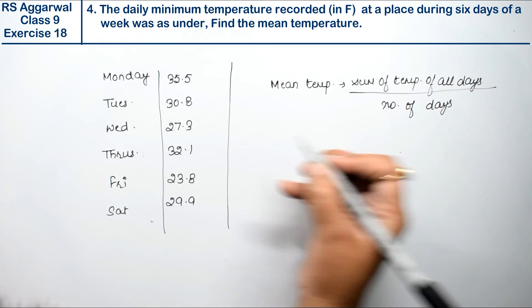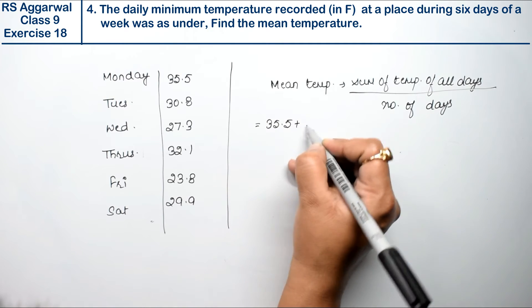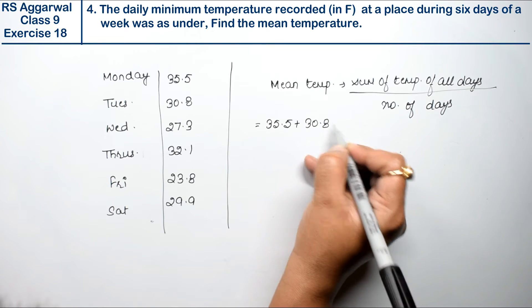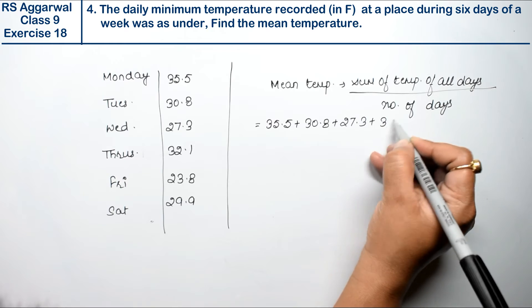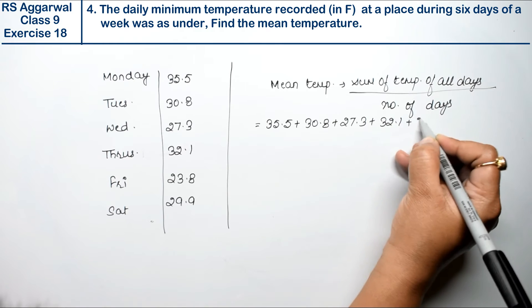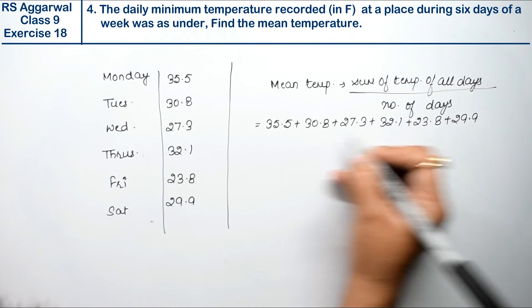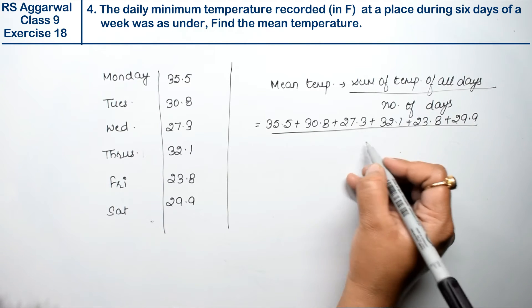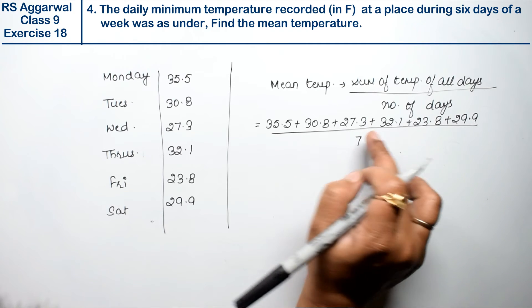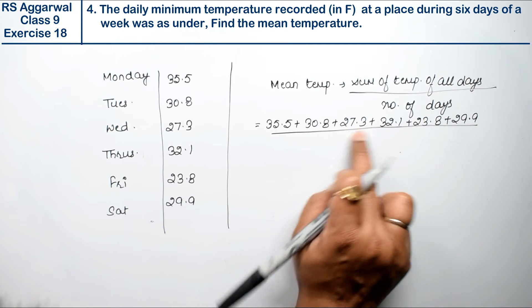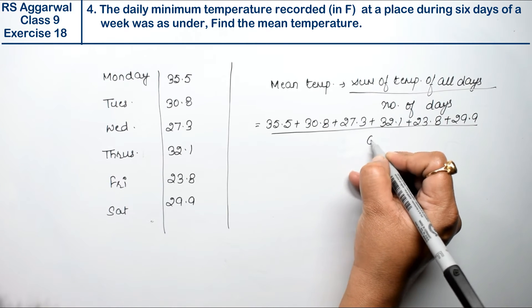To sum kya hoga? 35.5 plus 30.8 plus 27.3 plus 32.1 plus 23.8 plus 29.9 divided by days kitna hai? Seven, sorry, six. Sunday ka nahi diya hua hai, isliya six days hai.